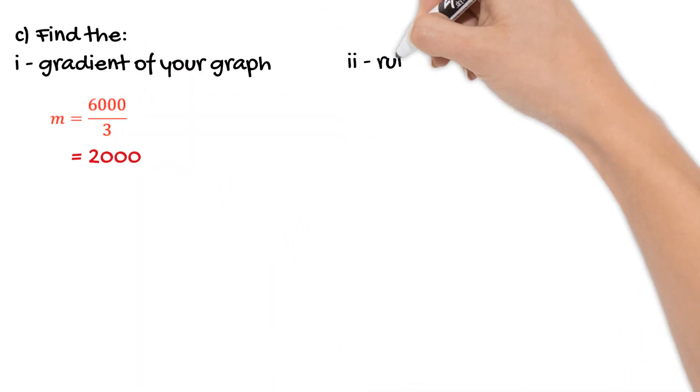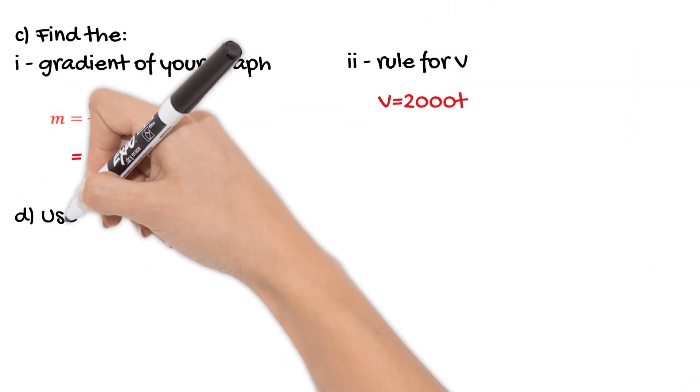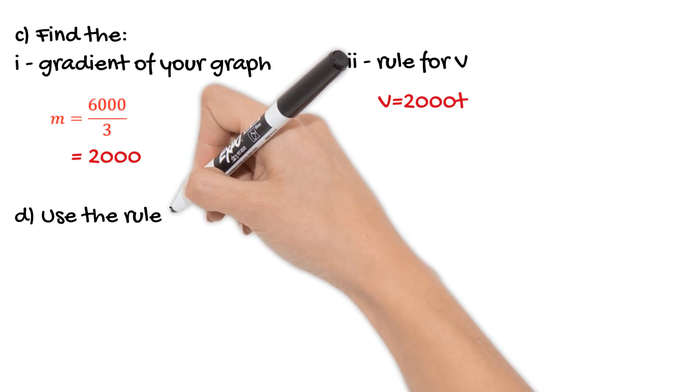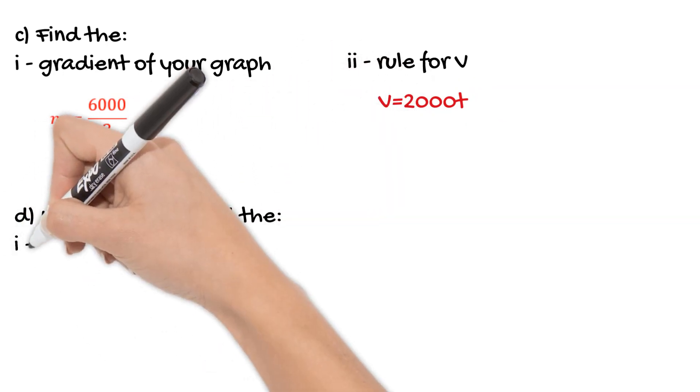So that leads us to the next part of our question, which is finding a rule for the volume. So V is equal to 2,000t. So we just got it in that form y equals mx where we know m is 2,000.